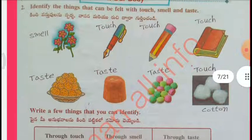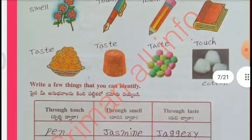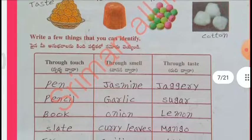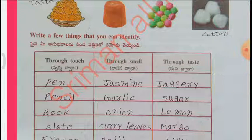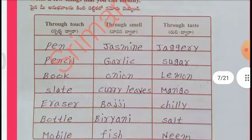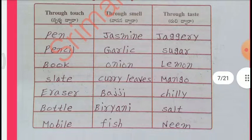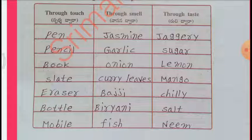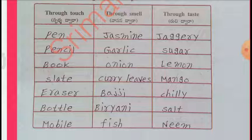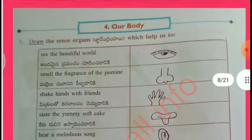Things you can identify through touch: pen, pencil, book, slate, eraser, bottle, mobile. Through smell: jasmine, garlic, onion, curry leaves, biryani, fish. Through taste: jaggery, sugar, lemon, mango, chili, salt, neem.